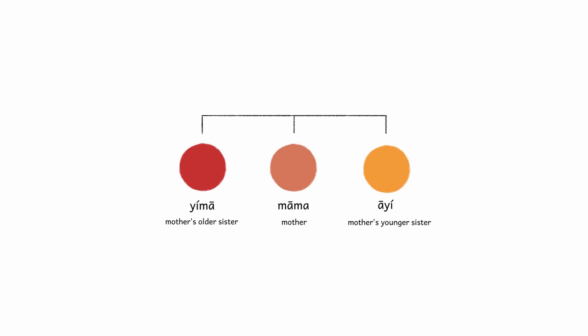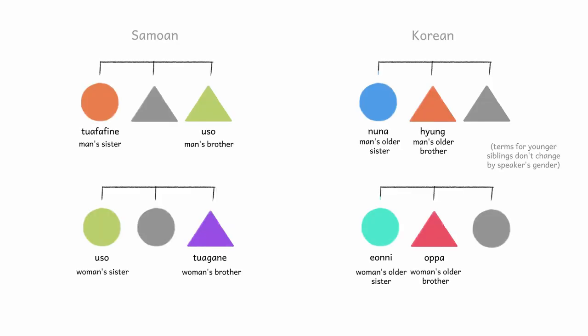In Mandarin, an extremely descriptive language, people of the same generation can be distinguished by age. For example, your mother's older sister and younger sister get different terms. And in some languages, the term you use for someone might depend on if you're the same gender or not.